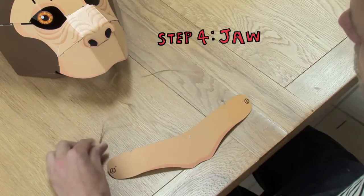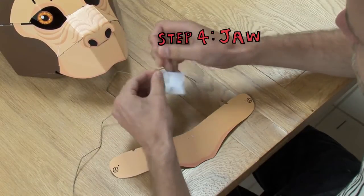Take the jaw and the string, and the little envelope which contains two split pins and two rubber bands.